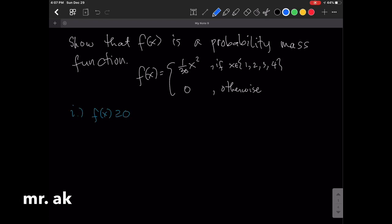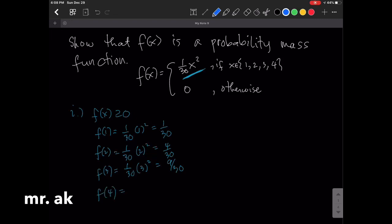So for the first condition we have, we'll just substitute for every x. So f of 1 is, we substitute that right here, that's 1 over 30 times 1 squared is 1 over 30. f of 2 is 1 over 30 times 2 squared is 4 over 30. f of 3 equals 1 over 30 times 3 squared, that is 9 over 30, and f of 4 equals 1 over 30 times 4 squared, that's 16 over 30.